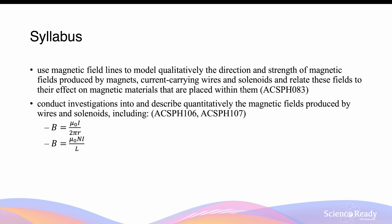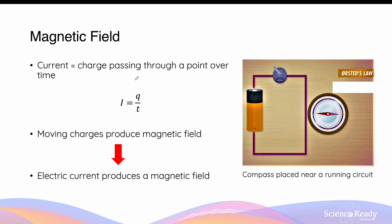Hey everyone, this video is on current-carrying wires and solenoids. By way of review, an electric current is defined as charges passing through a certain point in a conductor over time. To calculate current, we divide the charge in coulombs by the time in seconds. Moving charges, such as those in currents, will also produce their own magnetic field.